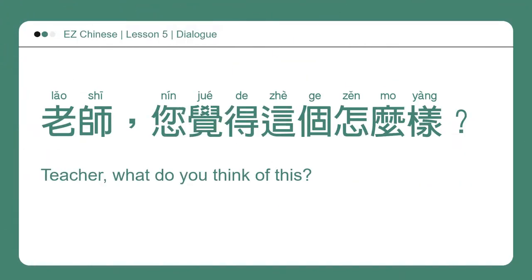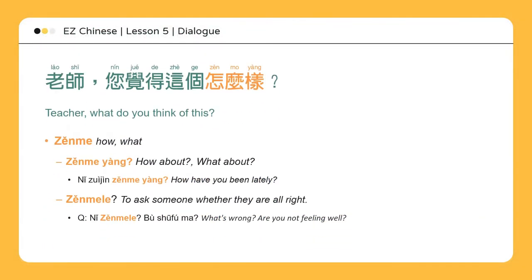老师，您觉得这个怎么样？Teacher, what do you think of this? 怎么样 means 'how about' or 'what about,' and is used to ask about others' situation.